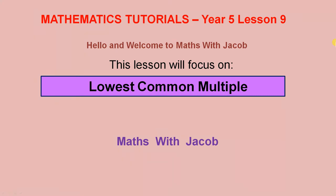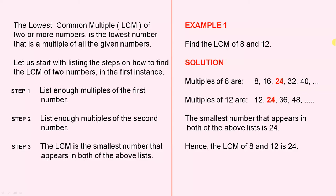Hello and welcome to Maths with Jacob. This lesson will focus on Lowest Common Multiple. The lowest common multiple, abbreviated to LCM, of two or more numbers is the lowest number that is a multiple of all the given numbers.